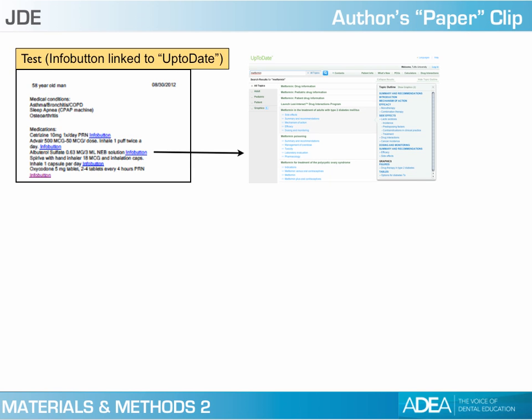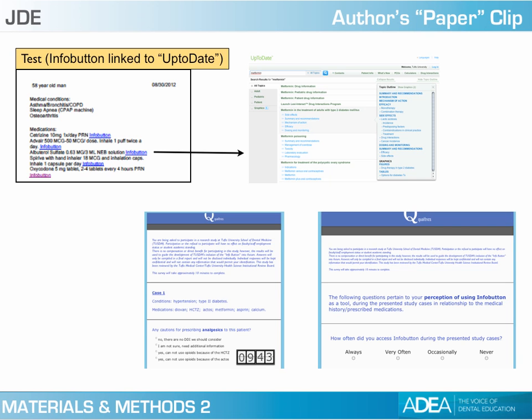Here is an example of a medical history for the test group. The InfoButton is linked to UpToDate, and you can see that close to the medication is a hyperlink to the UpToDate web page, identifying the drug-drug interaction for that particular medication. On the left side of the screen, you can see how, using the Qualtrics platform, we managed to measure the time, and also a sample of the perception survey.